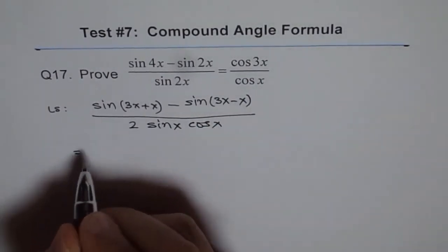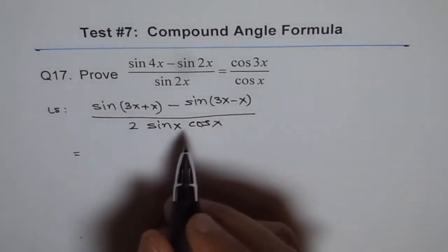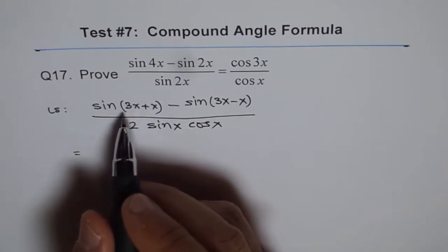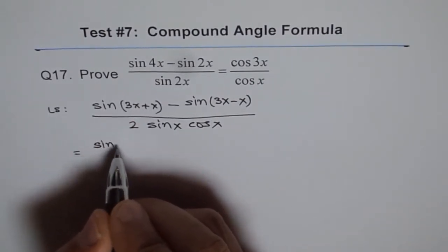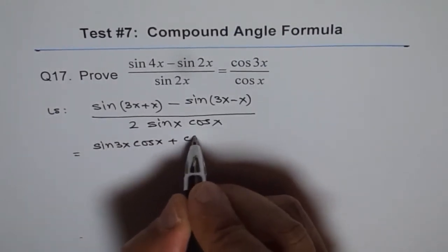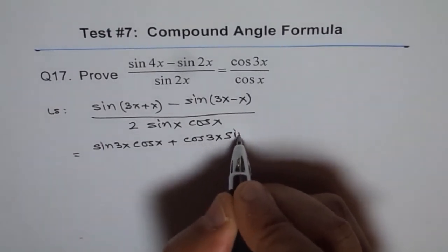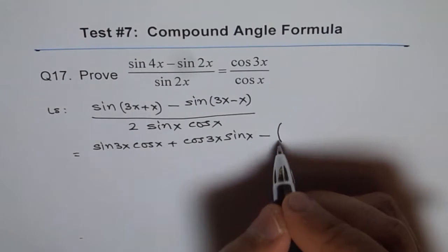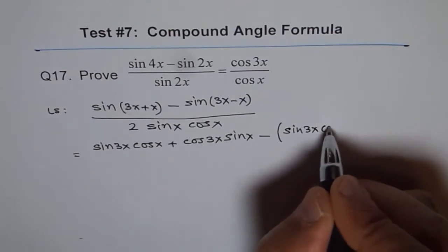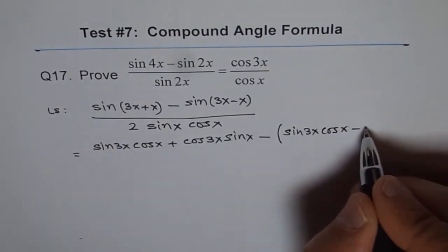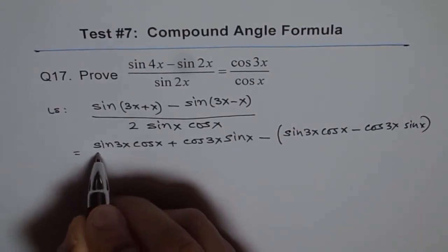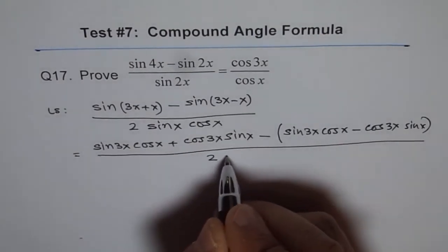Now we can expand both using sine (a plus b), where sine (a plus b) equals sine a cos b plus cos a sine b. Expanding gives us: sine 3x cos x plus cos 3x sine x, minus the bracket (sine 3x cos x minus cos 3x sine x), all divided by 2 sine x cos x.